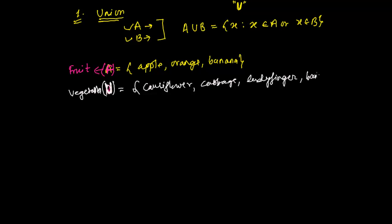Banana is also used as a vegetable in our country — the unripe green banana is sometimes used as a vegetable curry. So I am including banana in the vegetables set as well. So now I have two sets: fruit set F and vegetable set V.